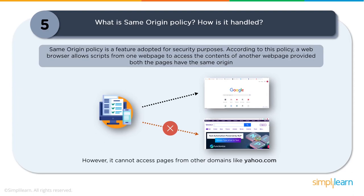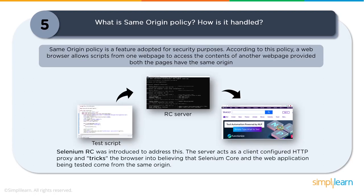Due to the Same Origin Policy, you are limited to accessing elements only within the same domain. This was a major limitation for early Selenium. It was handled by Paul Hammant, who created Selenium Remote Control to trick the browser into believing that Selenium Core and the web application under test came from the same domain. This is how the Same Origin Policy was handled, and Selenium RC became Selenium version 1.